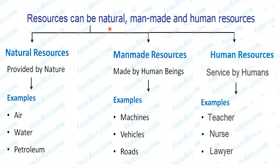Resources can be broadly divided as natural resources, man-made resources, and human resources. Natural resources: any resource that is available or provided by nature and free in supply are called natural resources. For example, air, water, petroleum, and all minerals are natural resources.